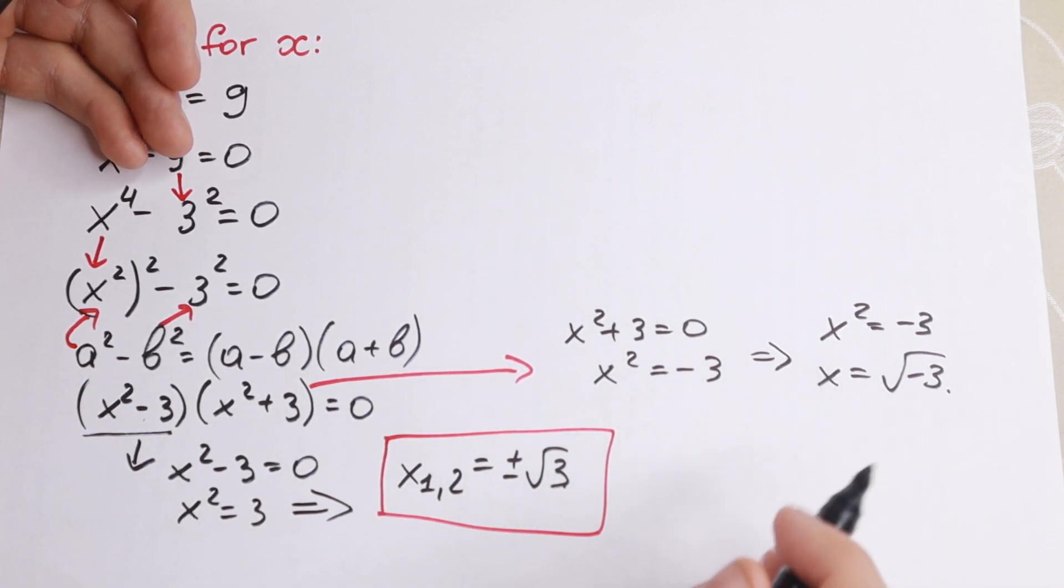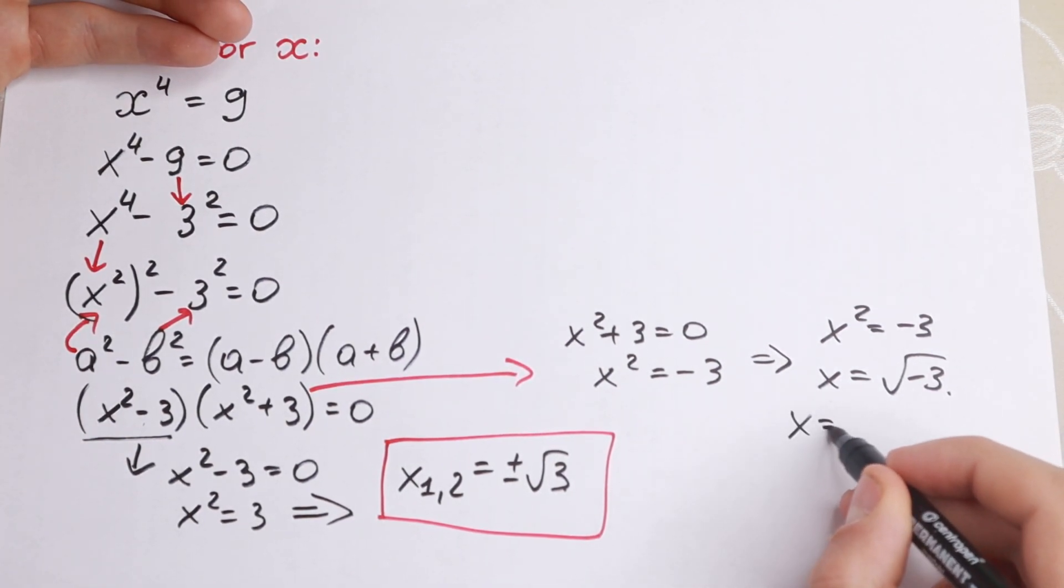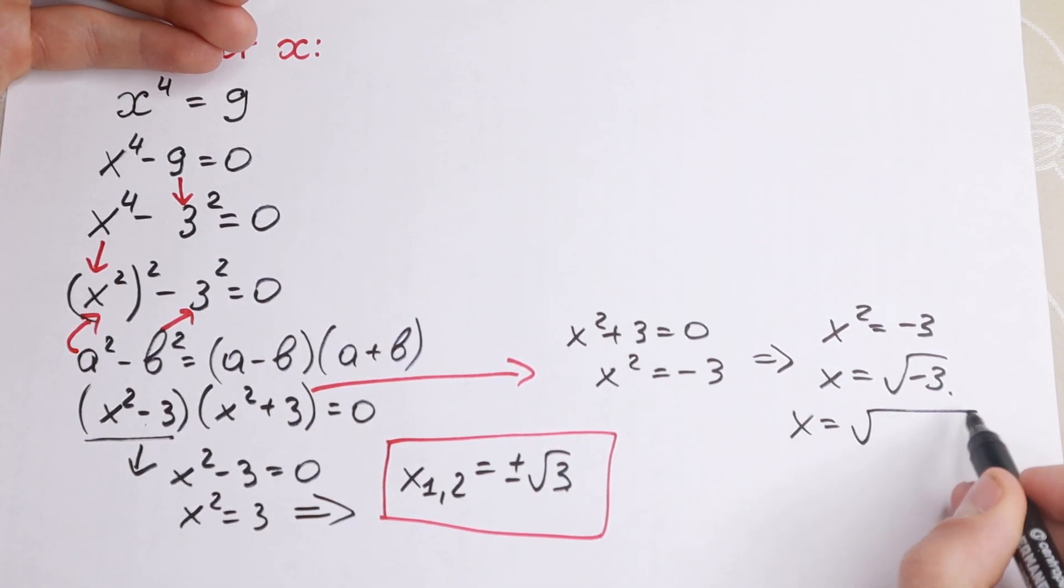So we need to write x squared equal to minus 3, x equal to square root of minus 3. And in real numbers this equation doesn't have any root. But we are talking about all solutions.